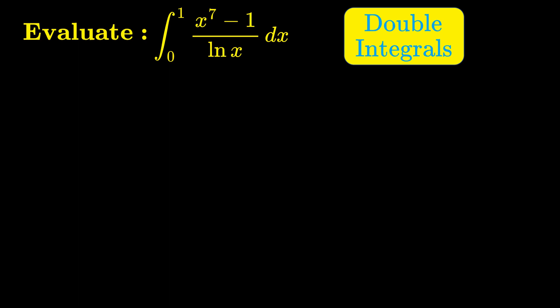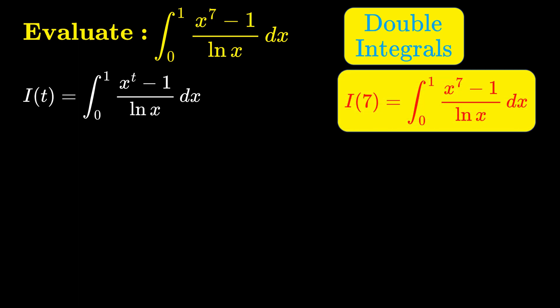We are going to first define a function I of t to be the integral of x power t minus 1 over natural log of x dx from 0 to 1. This is because this function is the generalization of the integral that we are going to evaluate. In particular, our integral is just I of 7.